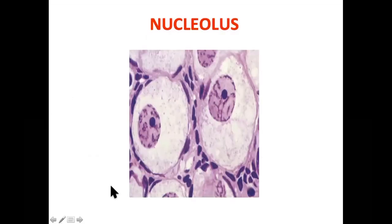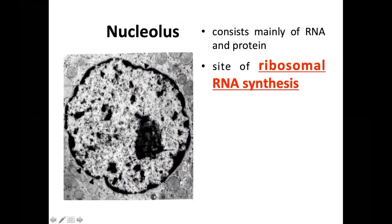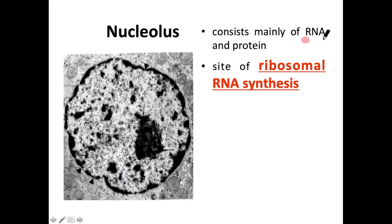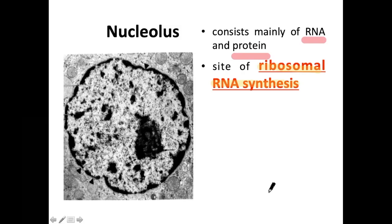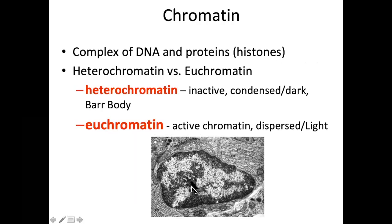The nucleolus is comprised of RNA and protein. Most importantly, the nucleolus is the site of ribosomal RNA synthesis — this is the most important thing to memorize about the nucleolus.